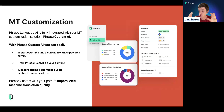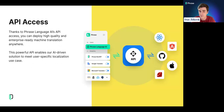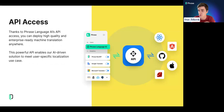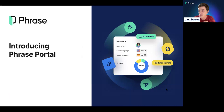Phrase Language AI has many powerful components that users have been benefiting from for a long time. One question we often get is: how can we extend these benefits outside of the TMS? Last year we released API access, making many of these features accessible via API. However, API requires quite a lot of technical finesse — similar to how TMS requires localization finesse — which can limit the value that Phrase Language AI can provide. We are taking one more step to extend accessibility with a brand new product: Phrase Portal.